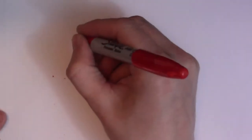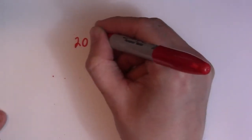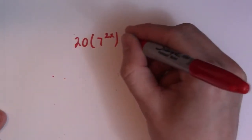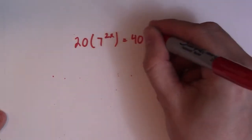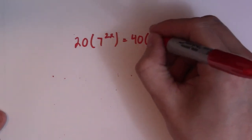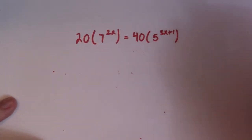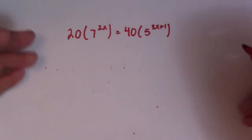So let me give you an example of a hard example. So 20, 7 to the 2x, and that's 40, I don't know, 5 to the 3x plus 1. I immediately regret that, but anyway. So here it is. So we need to solve this thing.